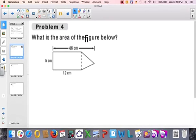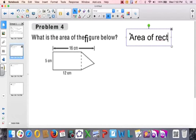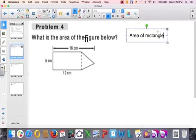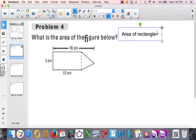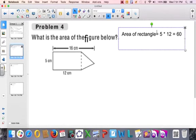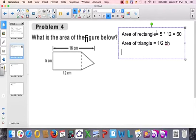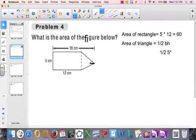In this problem, we have a composite figure. We have what I'd hope you'd realize is a rectangle with a triangle. Area of the rectangle is 5 times 12, which is 60. Then the area of the triangle, we know that's 1 half base times height, right?